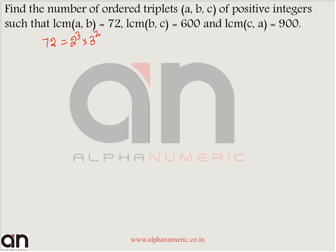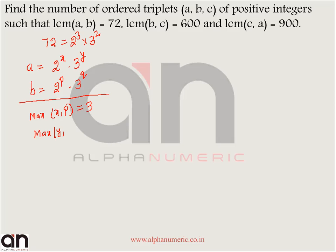A and B must consist of powers of only 2 and 3. So let A equal 2 raise to power X into 3 raise to power Y, and B equal 2 raise to power P into 3 raise to power Q. Among these two numbers, the maximum power of 2 must equal 3, so max(X, P) = 3, and the maximum power of 3 must equal 2, so max(Y, Q) = 2.